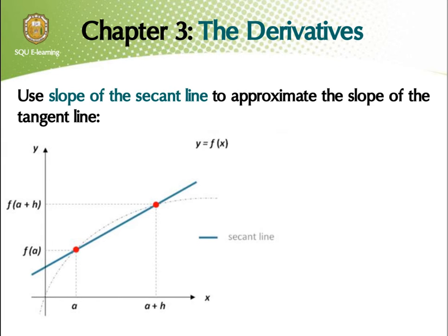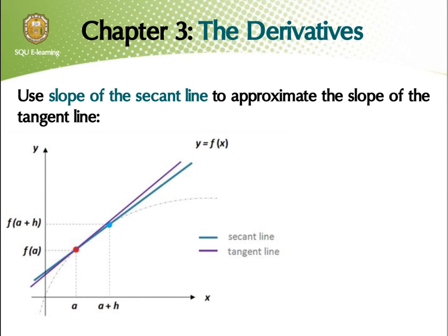Now, as h approaches 0, the point (a plus h, f of a plus h) will get closer and closer to the point (a, f of a) on the curve. And the slope of the secant line will be a good approximation for the slope of the tangent line.